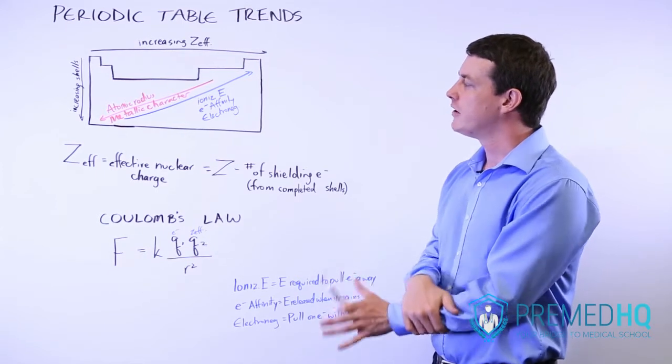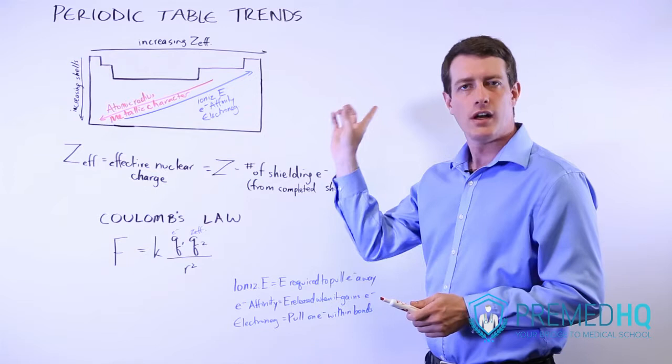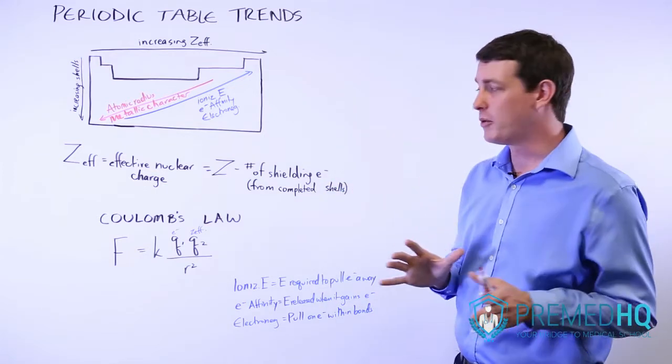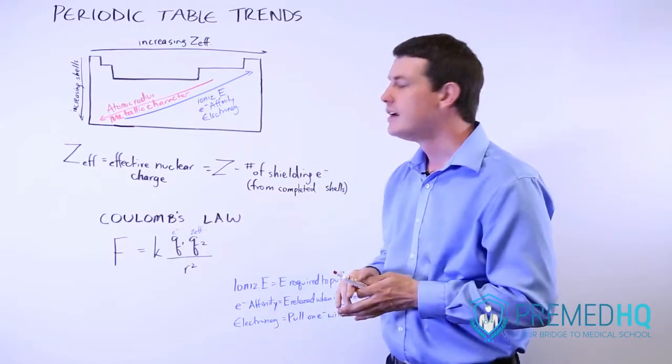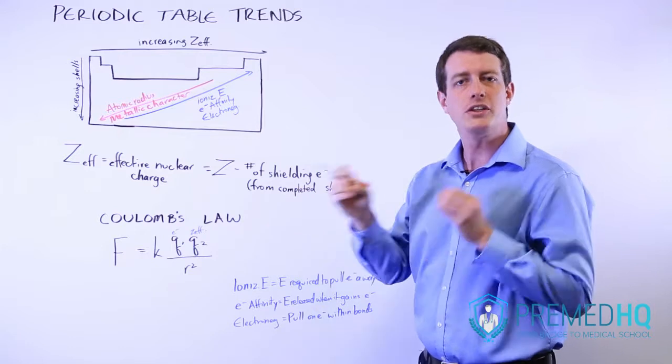But ultimately, the Z effective is very important in understanding why certain quantities get greater as you move up and to the right on the periodic table. And in order to understand that, we have to look at Coulomb's law, which is a law from physics that describes the forces between two point charges.